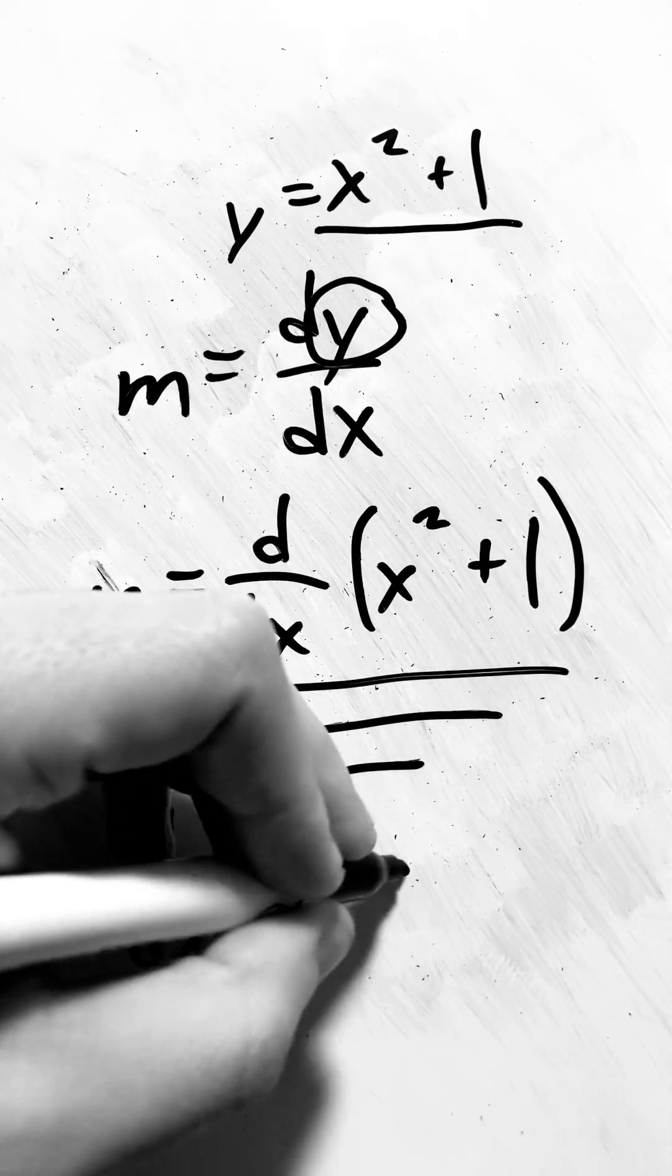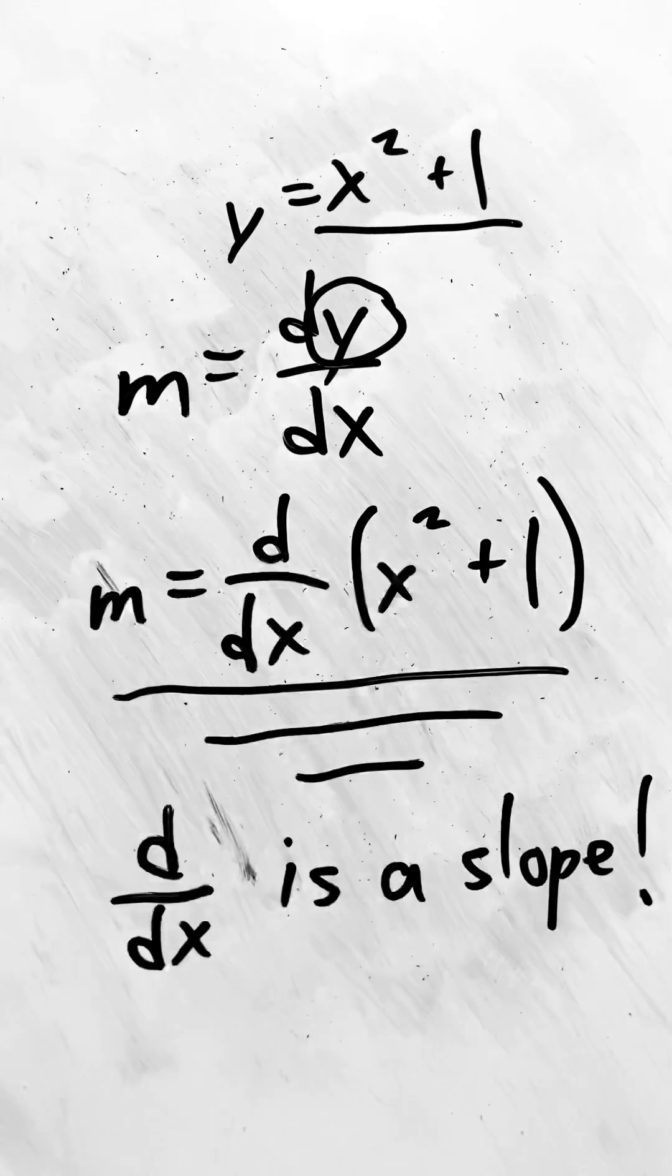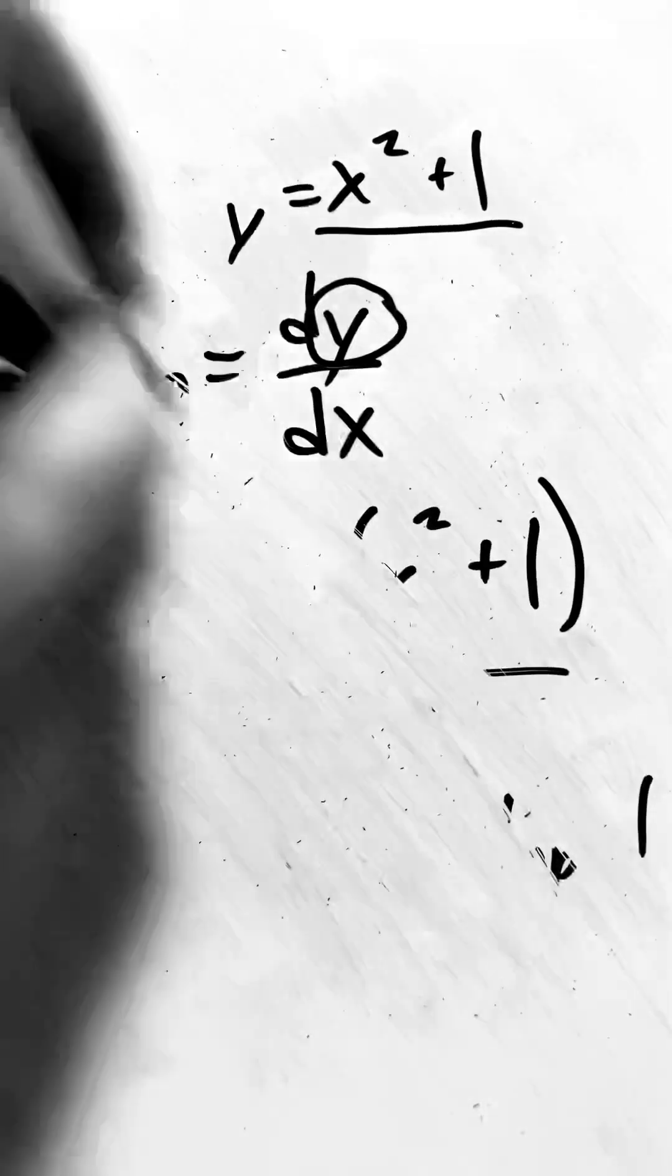d dx means the slope of some curve, but it's generalized for any slope, for any equation, not just for a straight line.